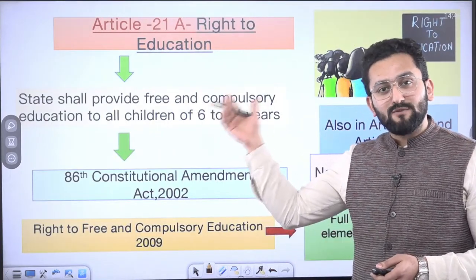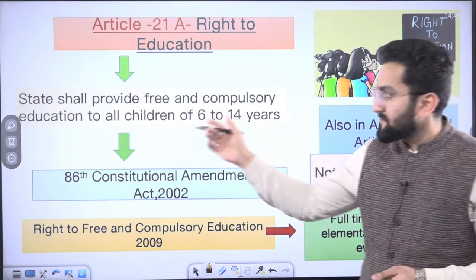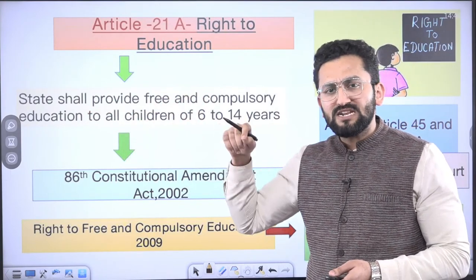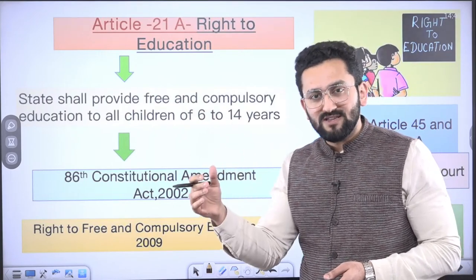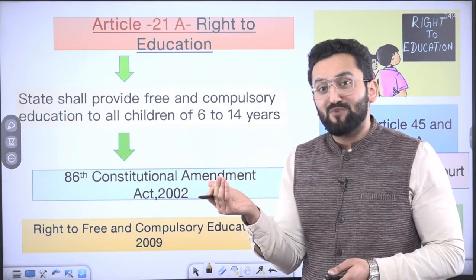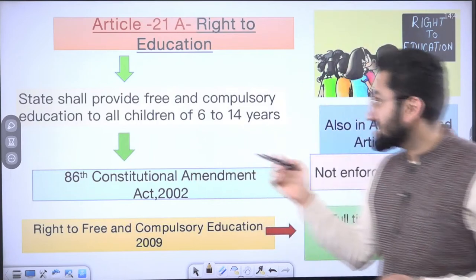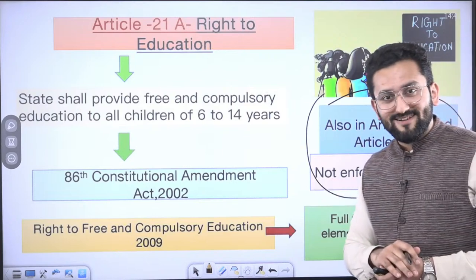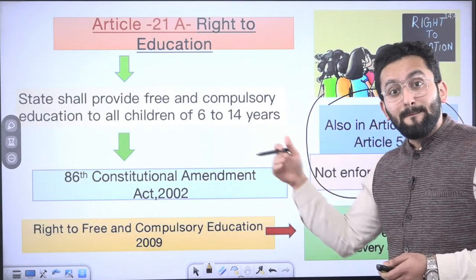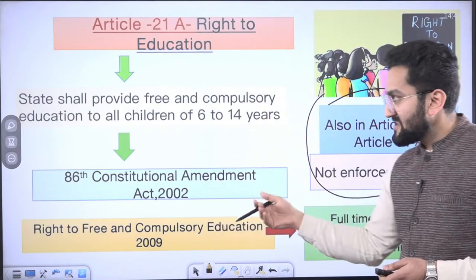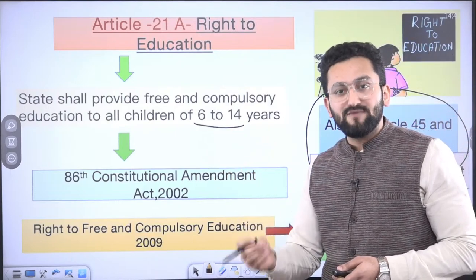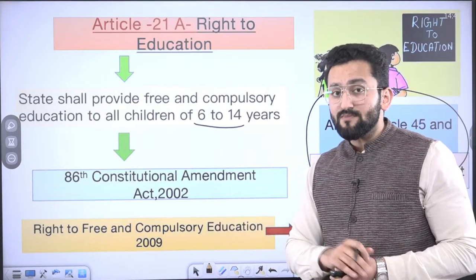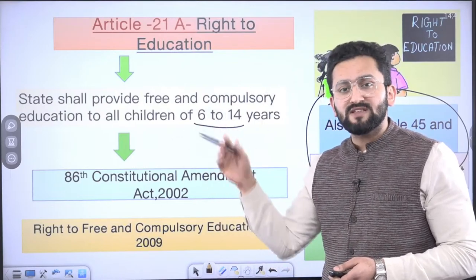Today we are going to start from Article 21A. As you can see the language — 'state shall provide' — it means it will be the responsibility of the state. Our constitution was already having provisions with respect to the state having this responsibility towards education of children, but this was mentioned in DPSP — Directive Principles of State Policy — which are not enforceable by court. By inclusion of these principles in fundamental rights made them enforceable by court. It means children belonging to this age group, if they are not having education service in their vicinity, then they can actually claim that facility, and the state is bound to provide that.